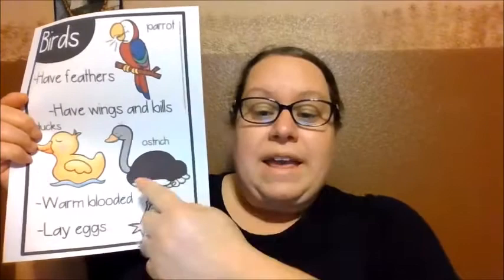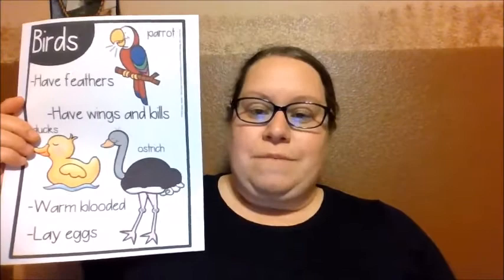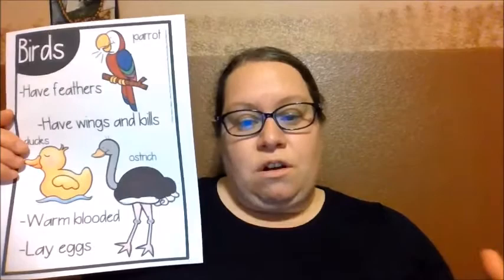Then we have birds. Birds are easy because they have feathers and wings, and they have bills — that's what their noses are called. They are warm-blooded like us, which is why they have feathers to keep their bodies warm. They also lay eggs. Examples are an ostrich, ducks, and a parrot. There are also ravens — we have ravens in the Grand Canyon — and bluebirds, hummingbirds, and blue jays. There are all kinds of birds.